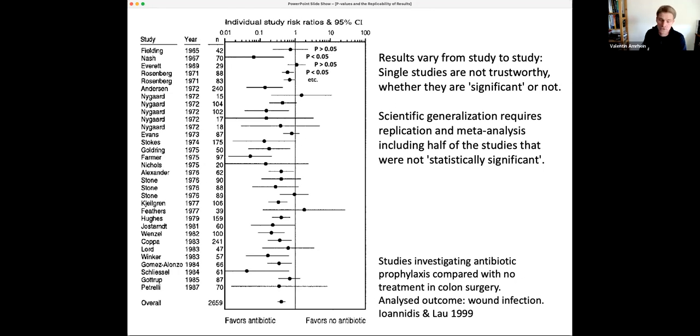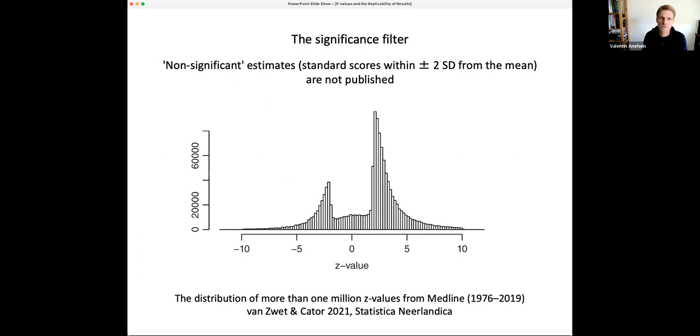You all know the file drawer problem, that is mostly based on, nowadays, on the significance filter, but actually could be based on anything that we use as a filter for publishing only selected results and not all results. So this is one of the most impressive pictures I saw on this topic. Z values, and you can nicely see this gap that is just between plus-minus two standard deviations from the mean. And those are one million effects published in the medical literature. And we just don't see this inner part of the effects. And that's a tragedy, big problem for science.